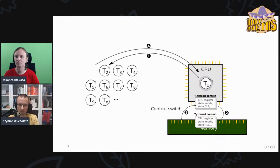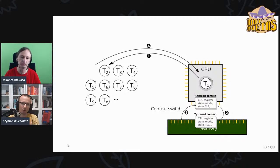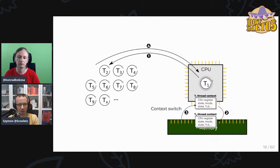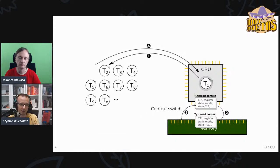Even though context switching is heavy, you can amortize this cost by lowering the number of threads and decreasing the number of context switches. Every single thread will have a longer period of time on the core before a context switch happens. The fewer threads, the less overhead — or in other words, the overhead is amortized in a better way.